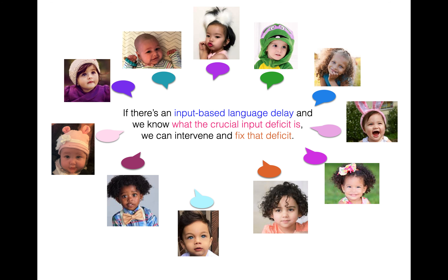In particular, if there's an input-based language delay and we know what the crucial input deficit is, well, we can intervene and fix that deficit. We can create impactful interventions if we know that there's an input-based language delay and we know what that crucial input deficit or difference actually is. That's why we care.